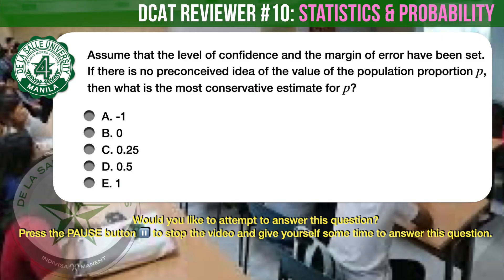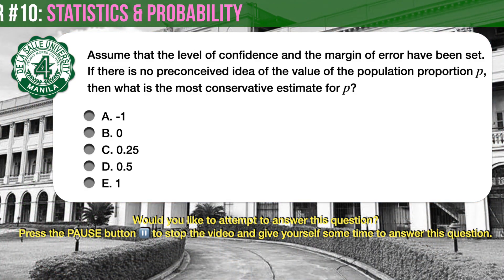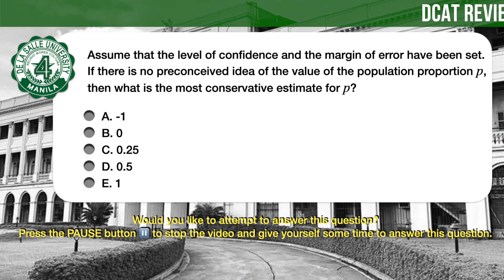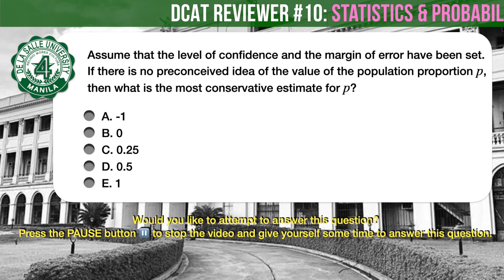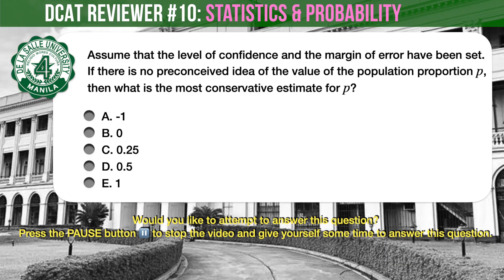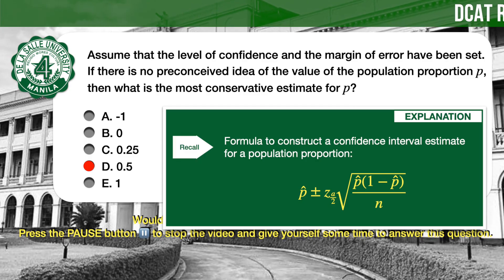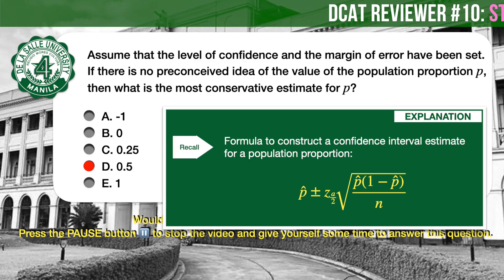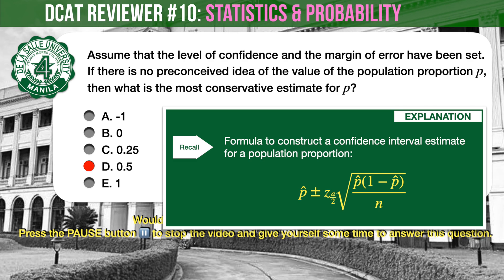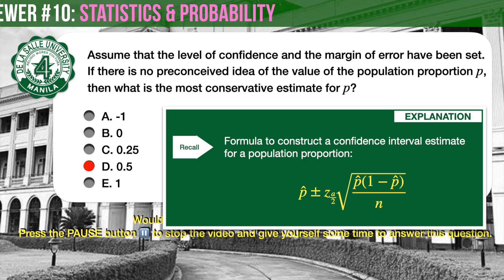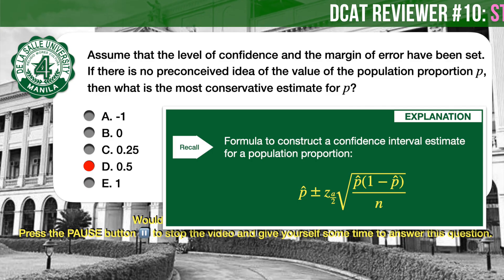Question number 4. Assume that the level of confidence and the margin of error have been set. If there is no preconceived idea of the value of the population proportion P, then what is the most conservative estimate for P? The correct answer is D, 0.5. The formula to construct a confidence interval estimate for a population proportion uses P(1−P). If P equals 0.5, then 1 minus P also equals 0.5, which limits their product to a maximum value of 0.25. Go ahead and do a what-if by substituting different answer choice values into the formula and compare the results.